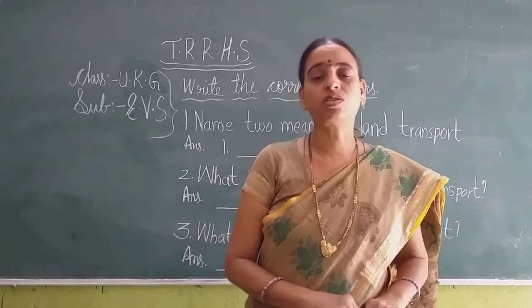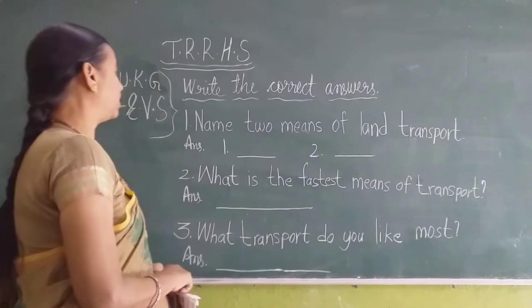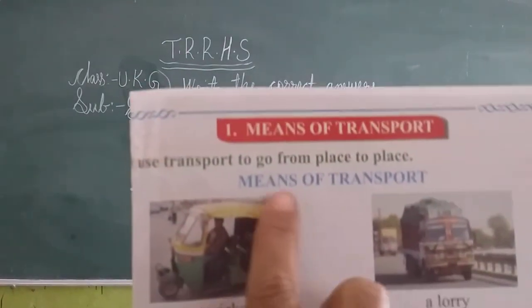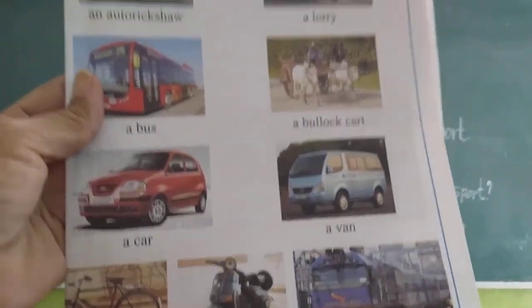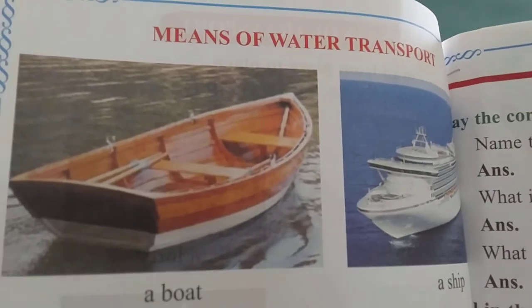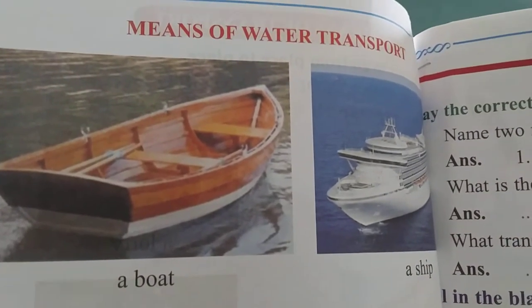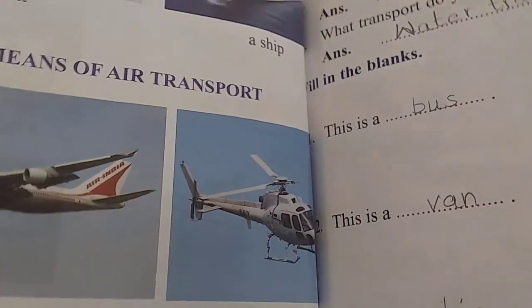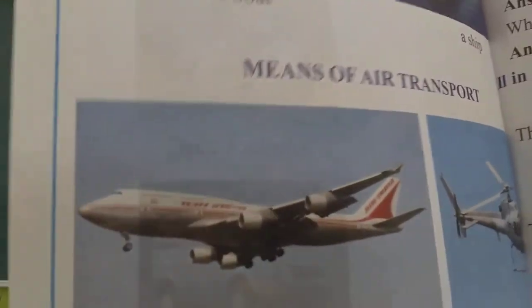So today we are writing some notes. Now look at the book. This is land transport — these all vehicles will move on land, so these are called means of land transport. These are means of water transport; ships and boats will move on water. And aeroplane and helicopter will fly in the air, so these are called air transport.